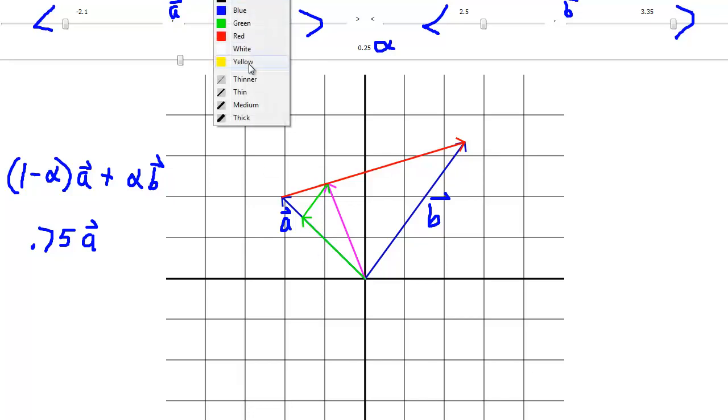Let me make this thinner. 0.75 times vector A gives us this green vector. And then 0.25, which is our alpha value again, 0.25 times vector B. Well, vector B is this big blue vector. And 0.25 of that would be roughly about a quarter of it. Okay, there's 0.25 of that.